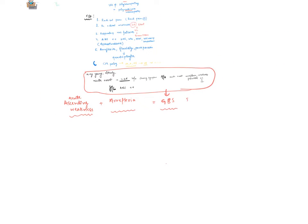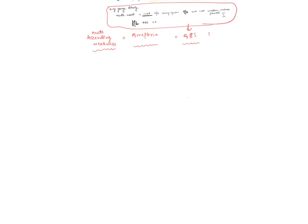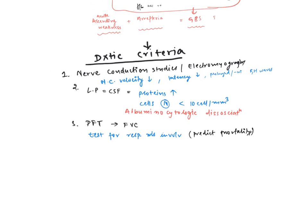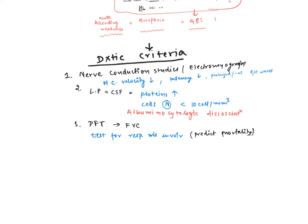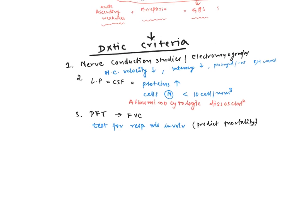Now we are discussing diagnostic criteria. The first test we need to do is nerve conduction studies or electromyography. Because it is a demyelinating disorder, nerve conduction velocity decreases and latency increases. F waves in demyelinating disorder will be prolonged and absent.